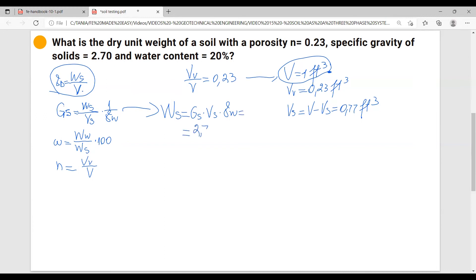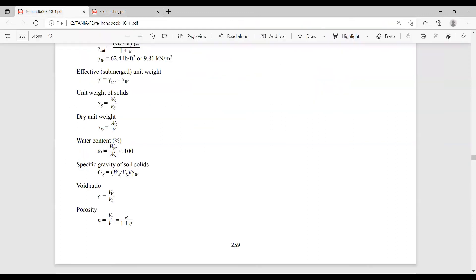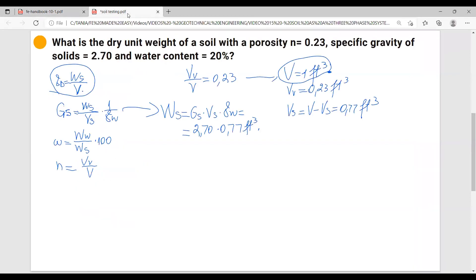Equals to 2.70 times volume of solids which is 0.77 cubic feet, times gamma water. Go back to your FE handbook - if you don't know it is given here, it is 62.4 pounds over cubic feet.